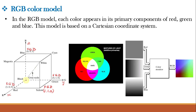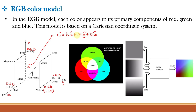The different colors in this model are points on or inside the cube and are defined by vectors extending from the origin. Each pixel contains a vector representing red, green, and blue components. The color vector C = R·R̂ + G·Ĝ + B·B̂, where R̂, Ĝ, and B̂ are unit vectors in the R, G, and B directions, and R, G, B are the magnitudes in those respective directions. The RGB image consists of three planes — R, G, and B — which combine on a monitor to produce a composite color image.